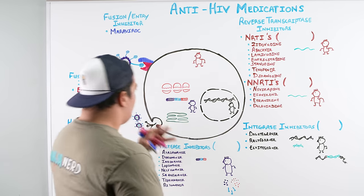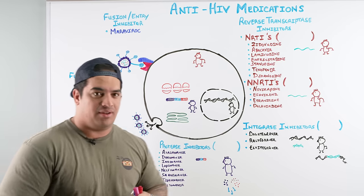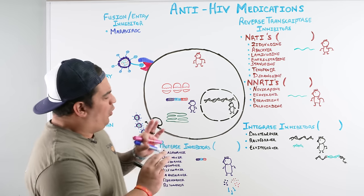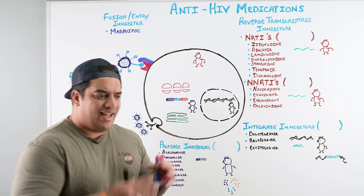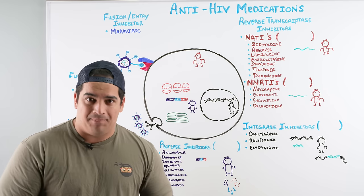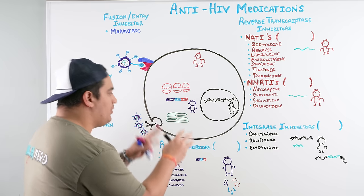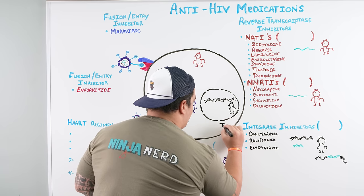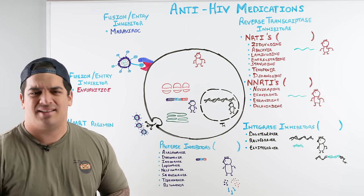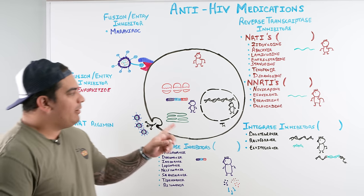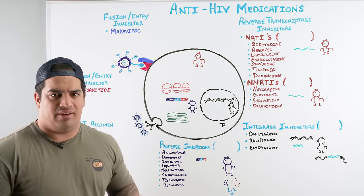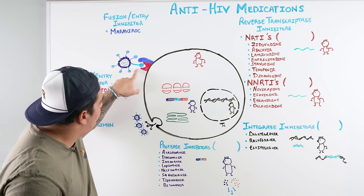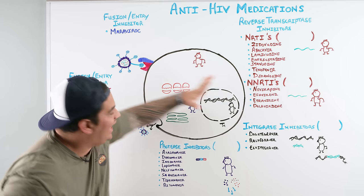The first category of antivirals we'll cover is anti-HIV drugs, known as antiretroviral therapies. HIV is a retrovirus — it takes RNA and converts it into DNA. It attacks our immune system, particularly our T-helper cells (CD4-positive cells). When the HIV virus binds onto our T-helper cells, it utilizes specific proteins to gain fusion and entry into the host cell.